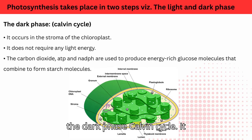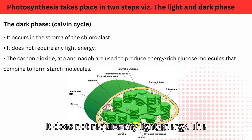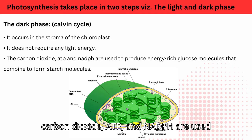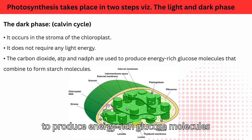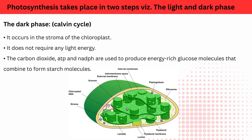The dark phase — Calvin cycle: it occurs in the stroma of the chloroplast and does not require any light energy. Carbon dioxide, ATP, and NADPH are used to produce energy-rich glucose molecules that combine to form starch molecules.